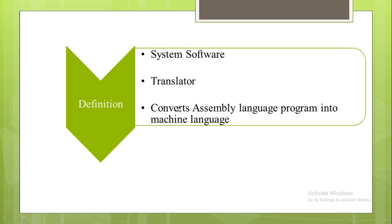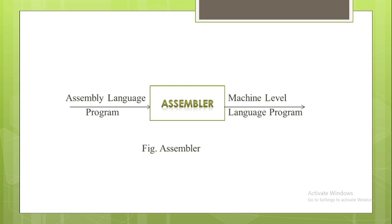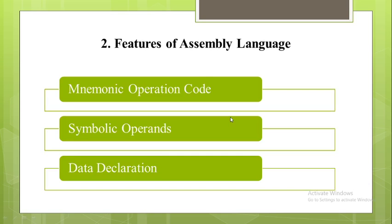This means the program that is written for one processor may not work on another processor, that's why it is called machine dependent. On this slide I have shown the diagram of assembler, where it takes the assembly language program as input, the assembler processes it, and it generates the machine level language program.